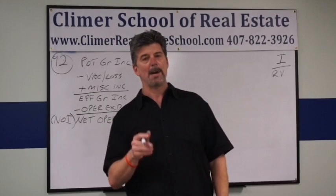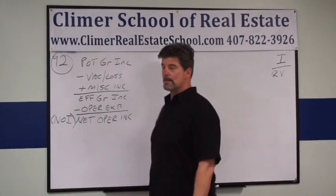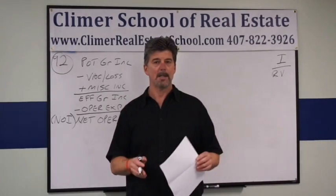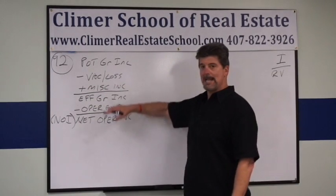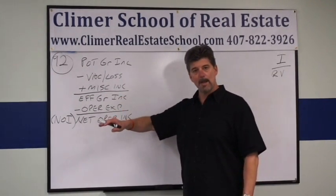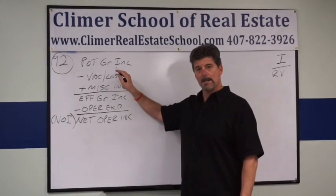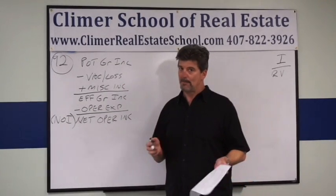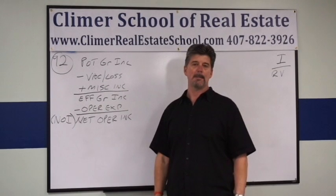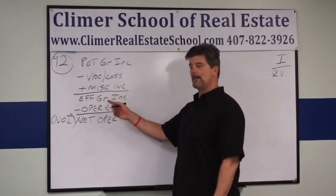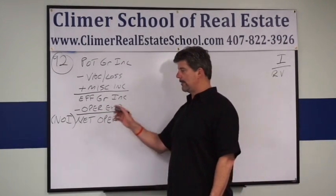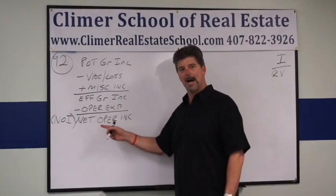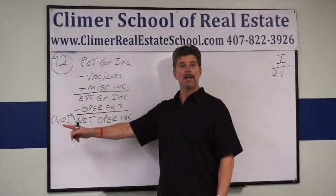There are a few concepts you need to be aware of before you start the math. If you're going to do an income capitalization math problem — or in real life evaluate an income-producing property — you have to write this down. This is a flow: Potential Gross Income is all the money it can make if 100% of units are rented 100% of the time. Subtract vacancy and losses, add miscellaneous income like coin machines or laundry, and you get Effective Gross Income. Subtract operating expenses from that and you get Net Operating Income, otherwise known as NOI.